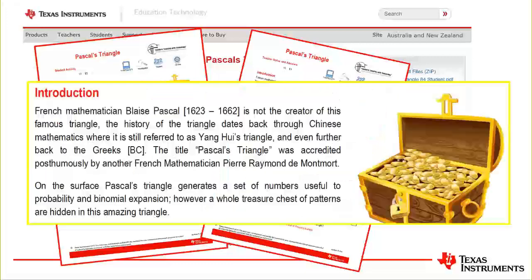This is the introduction from the student worksheet. It talks about how the French mathematician Blaise Pascal is actually not the creator of this famous triangle. It actually dates back through Chinese mathematics, where it was referred to as Yang-Hui's Triangle, and even further back to ancient Greece. Now, on the surface, Pascal's Triangle generates an interesting set of numbers, but our hidden treasure chest of patterns from this activity will show us so many more amazing things.